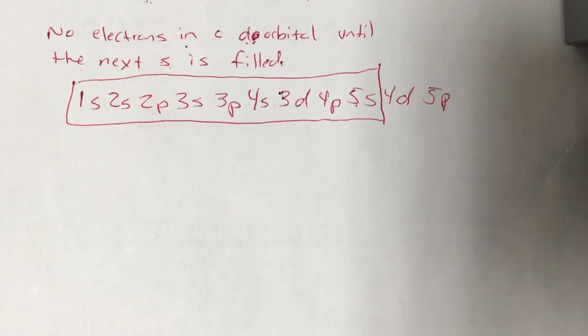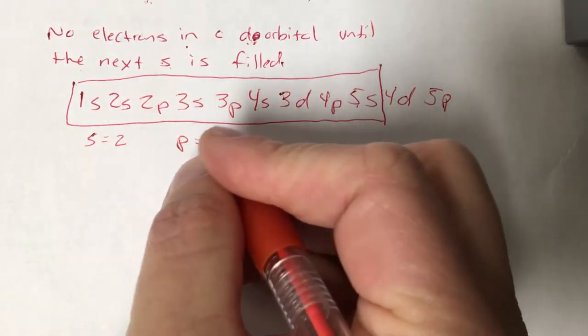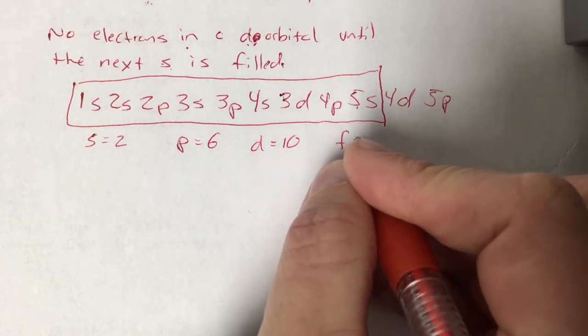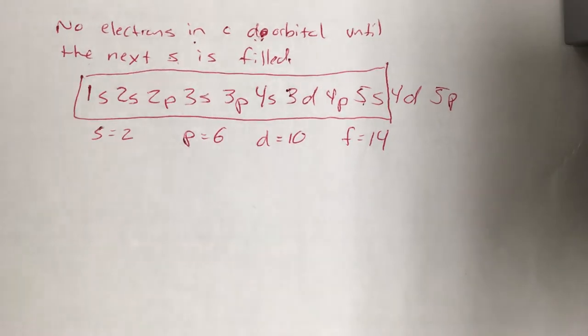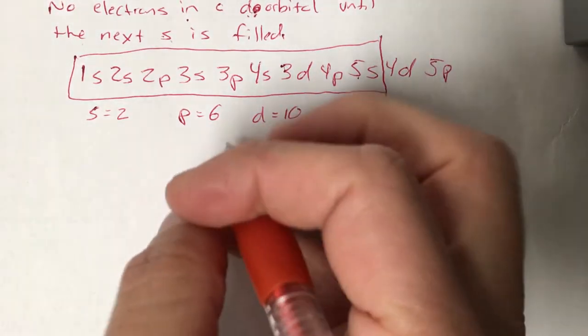Now, once you have that down, it's straightforward. We know that s orbitals hold a maximum of 2 electrons, p's hold a maximum of 6, d's hold a maximum of 10, and f's hold a maximum of 14. Again, the way that I told you to remember that is just knowing your orbitals.